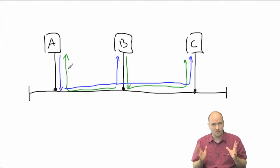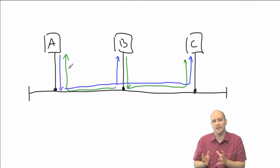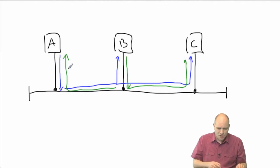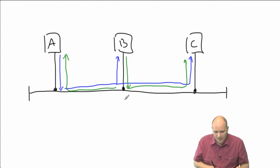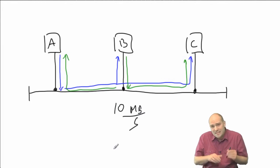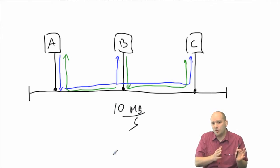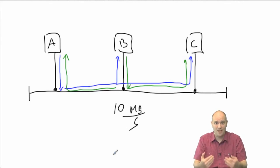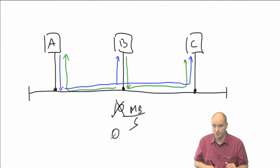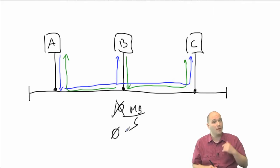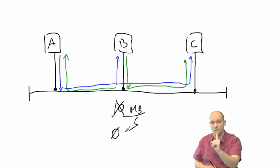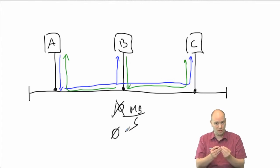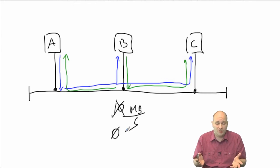On a shared network segment, only one station can transmit at a single point in time. If the total bandwidth on our cable is 10 megabits per second, that is the total bandwidth available only when one station is transmitting. If all three stations attempt to transmit simultaneously, the effective bandwidth is zero bits per second because they all detect a collision and back off. The effective bandwidth depends on the number of stations and the amount of traffic they attempt to send.